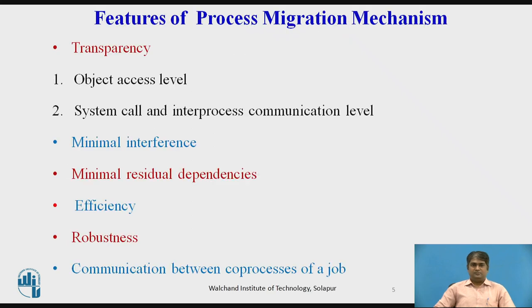Transparency of inter-process communication is also desired for the transparent redirection of messages during the transient state of the process. Minimal Interference: migration of a process should cause minimal interference to the progress of the process involved and to the system as a whole. One method to achieve this is by minimizing the freezing time of the process being migrated. Freezing time is defined as the time period for which the execution of the process is stopped for transferring its information to the destination node.